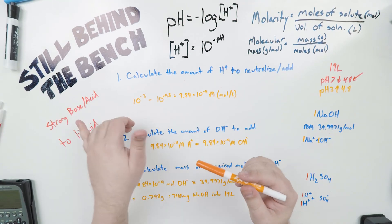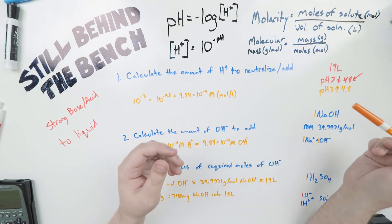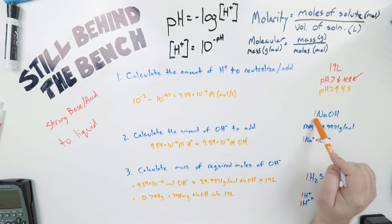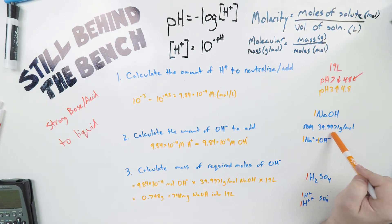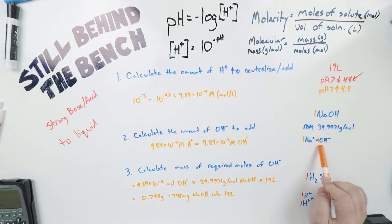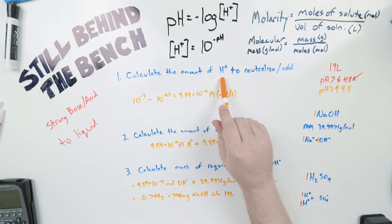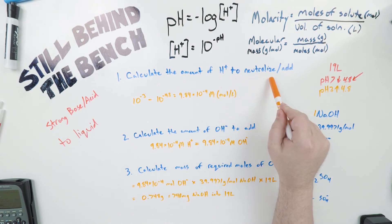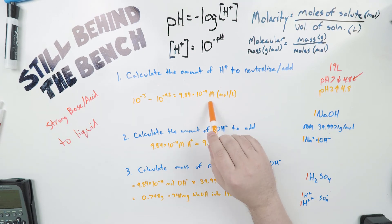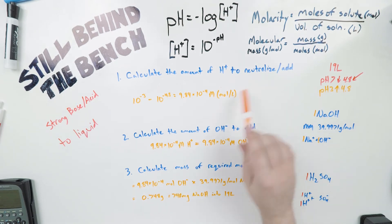Now we're talking about adding a strong base or acid to liquid to either raise or lower the pH. In this case I'm going to use 19 liters and raise the pH from 3 to 4.8 using sodium hydroxide, which has a molecular mass of 39.9971 grams per mole. For every mole of sodium hydroxide added, it dissociates into 1 mole of sodium ions and 1 mole of hydroxide ions. The first step is to calculate the amount of hydrogen ions to neutralize. 10 to the negative 3 minus 10 to the negative 4.8 gives us 9.84 × 10⁻⁴ moles per liter.